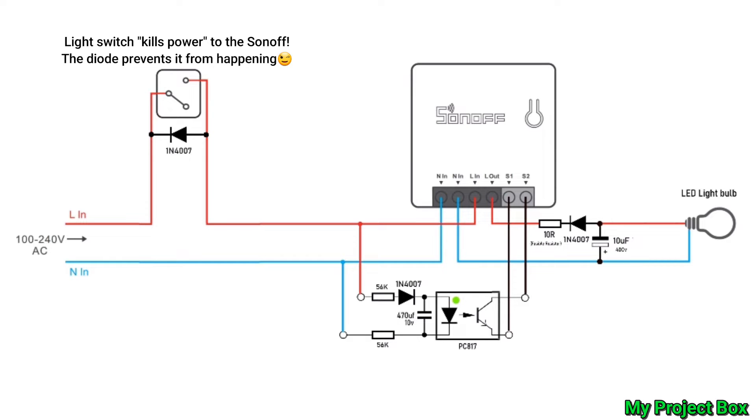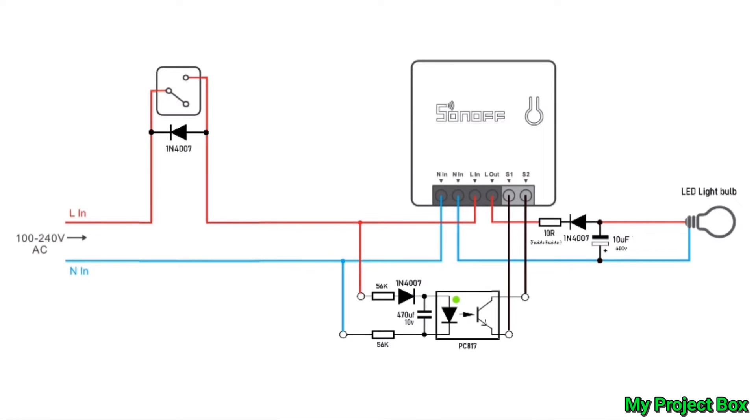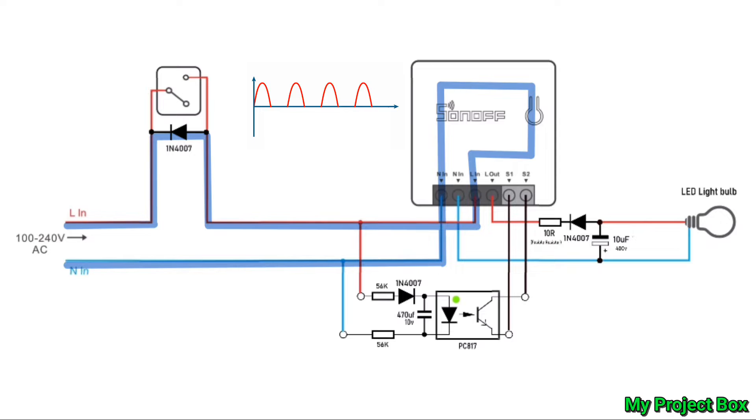So how I get around this is I have a diode that feeds half-wave to the Sonoff. So you put a diode directly across your light switch and then that way the Sonoff is still powered via half-wave and if the switch is closed you get full wave going to the Sonoff.